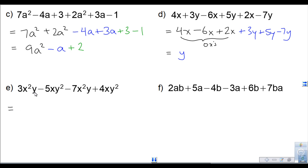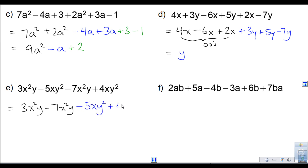Now we have x squared y terms and xy squared terms — those are different. I group the x squared y terms: 3x squared y minus 7x squared y. Then the xy squared terms: negative 5xy squared plus 4xy squared. Combining: 3 minus 7 gives negative 4x squared y. And negative 5 plus 4 gives negative 1, so I write negative xy squared.